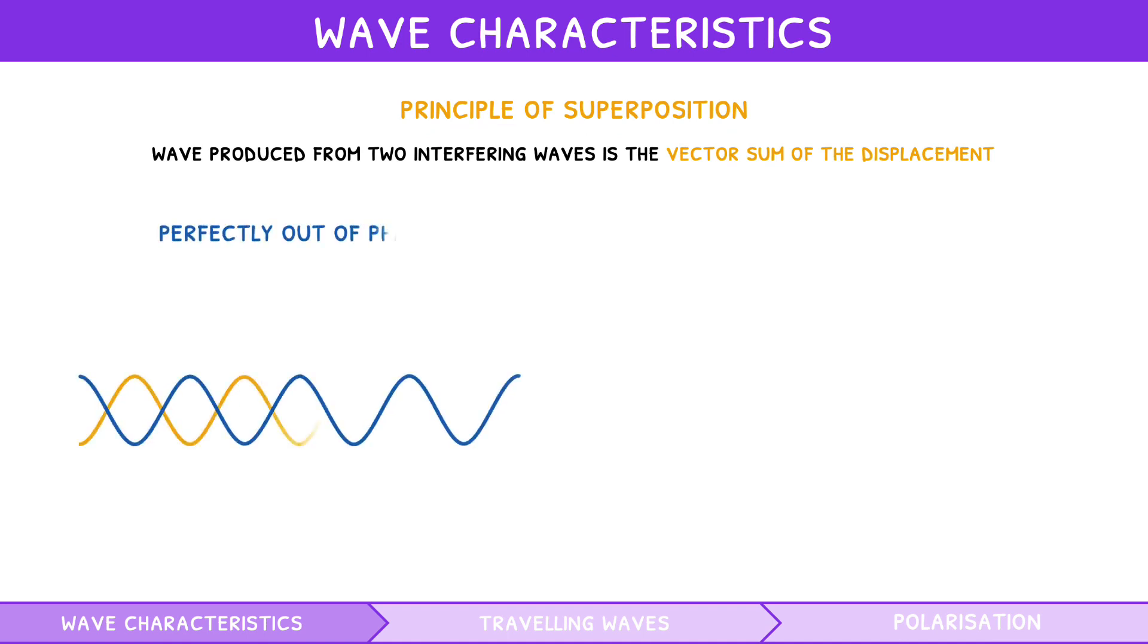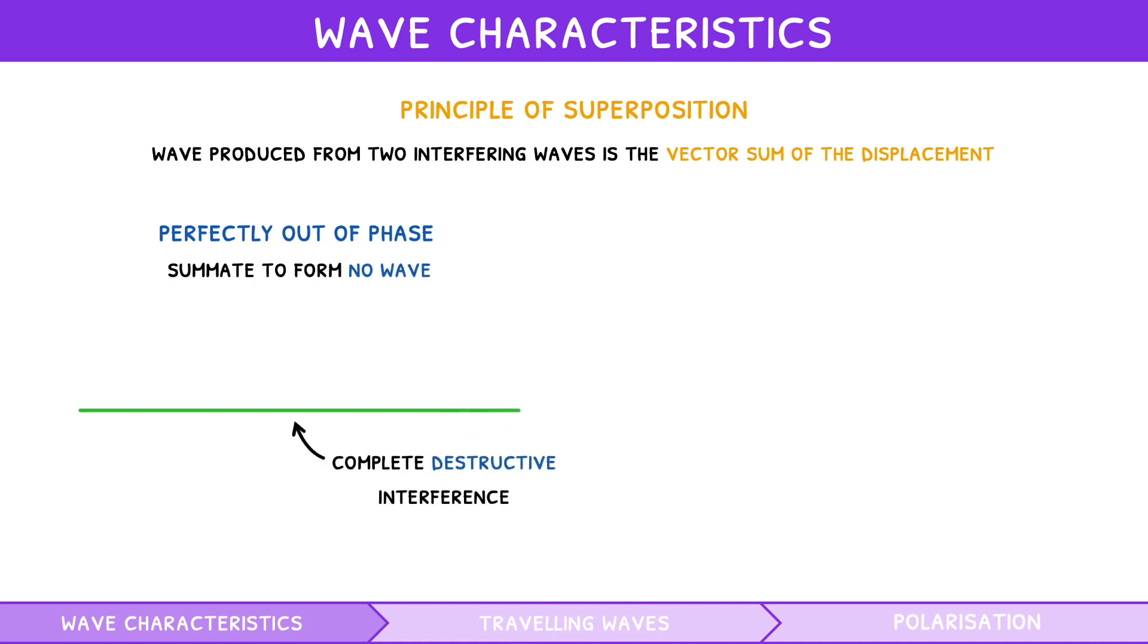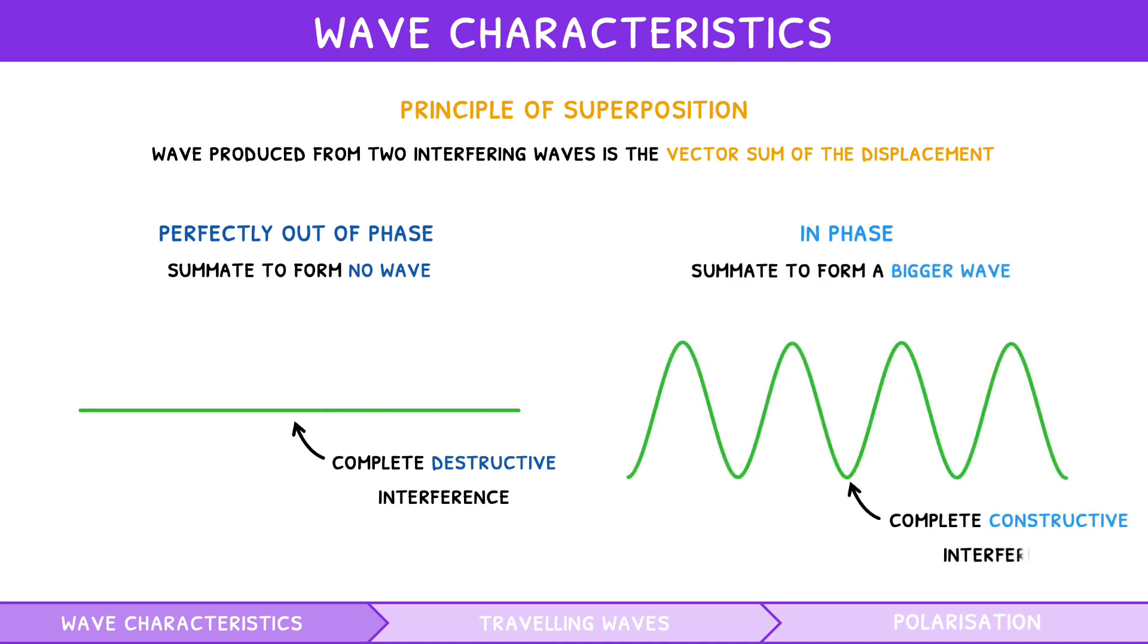When two perfectly out-of-phase waves combine, the displacements summate to form no wave. This is complete destructive interference, which decreases the amplitude of both waves. However, if two in-phase waves combine, the displacements summate to form a bigger wave. This is complete constructive interference, which increases the amplitude of both waves.